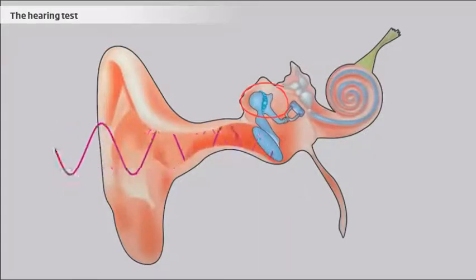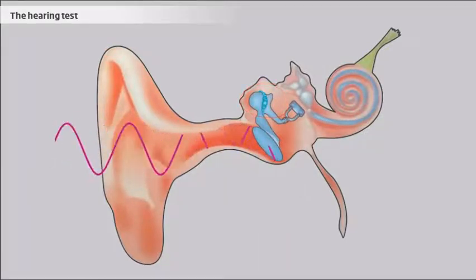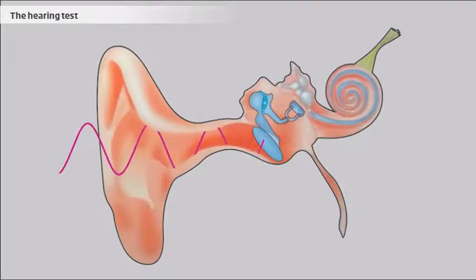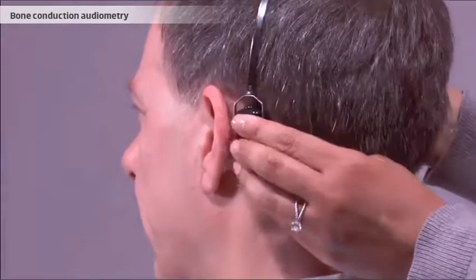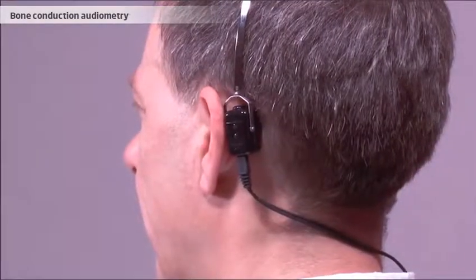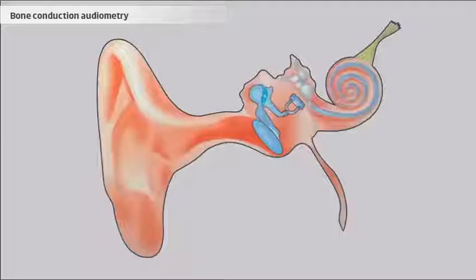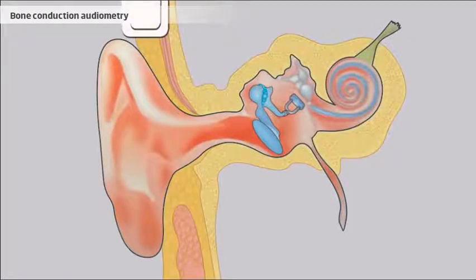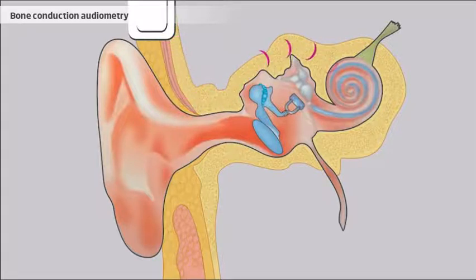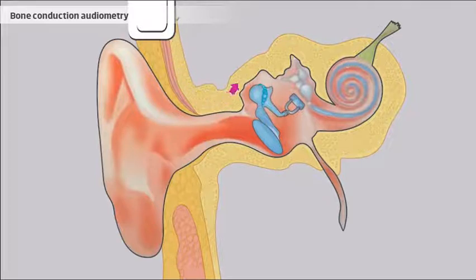However, there may be an obstruction in the middle ear which prevents sound waves from reaching the inner ear. To make sure there is no such obstruction, it is a good idea to perform bone conduction audiometry. This allows the hearing threshold to be determined independently of how the middle ear functions. A bone conductor is a vibrator that is placed behind the ear. The sounds from the bone conductor are transmitted through the cranium and activate the inner ear directly, bypassing the middle ear.